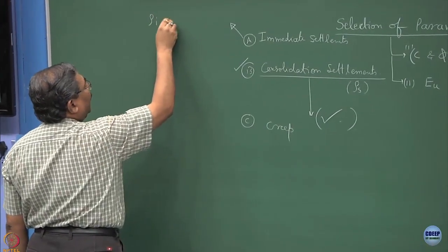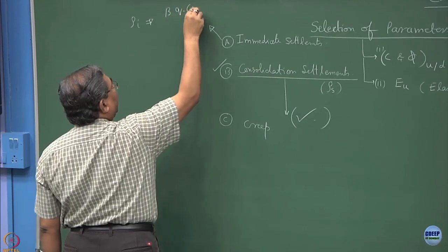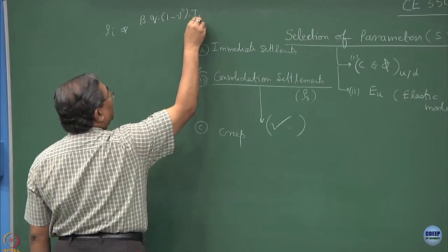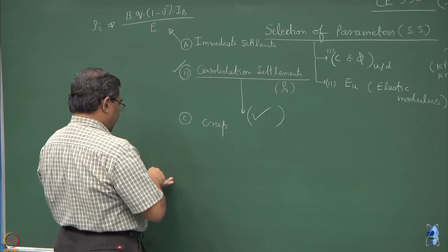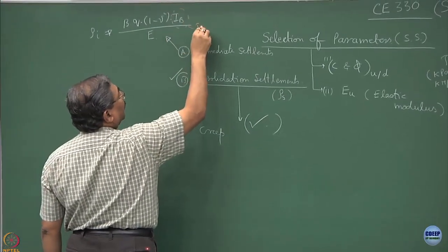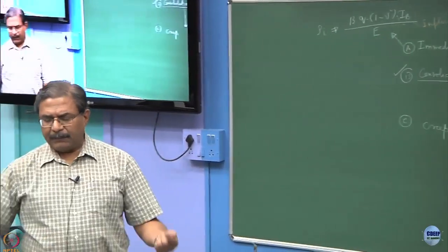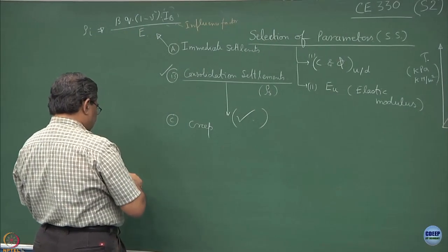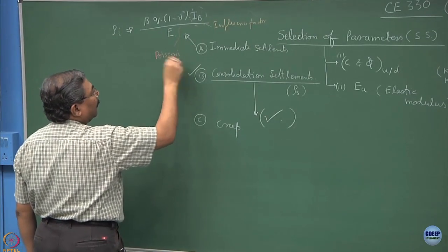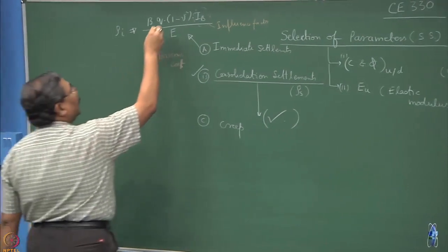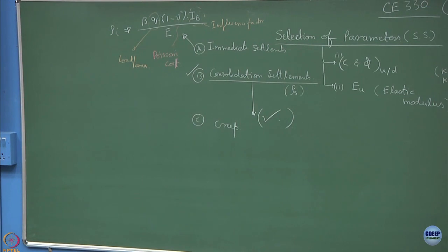Immediate settlements are defined as rho_i, and these are defined as b times q times (1 minus mu squared) multiplied by i_b and divided by E. Mu is the Poisson's coefficient, q is the load per unit area, and b is the width of the foundation.